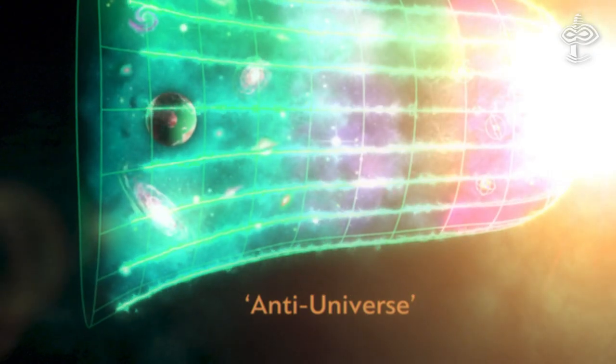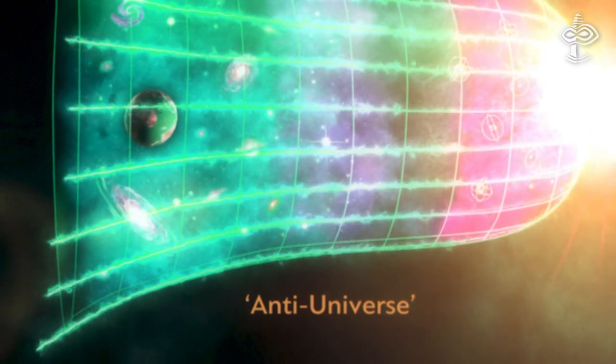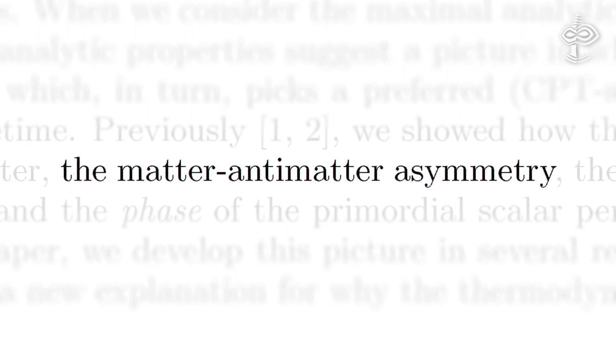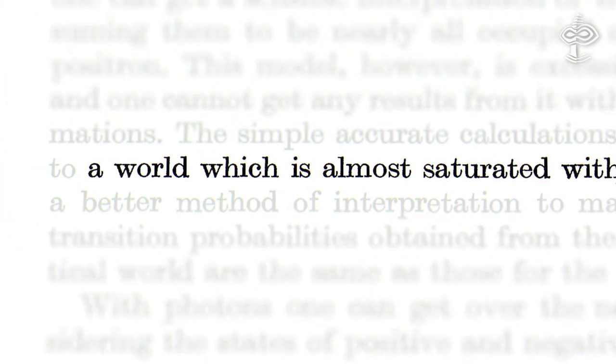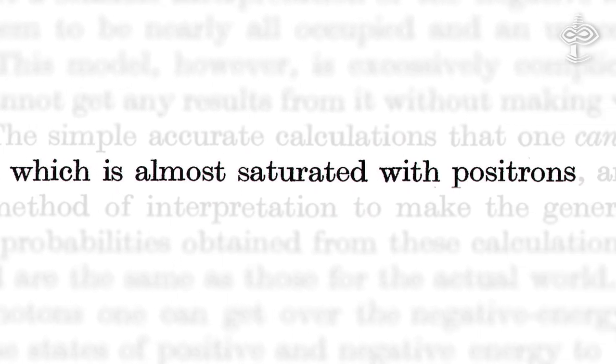The anti-universe will stretch back in time from the Big Bang, getting bigger and bigger. And it will be dominated by antimatter—or as was predicted by Dirac, be the world saturated by positrons. And its spatial properties will be inverted compared to those in our half. The situation is similar to the creation of electron-positron interaction in a vacuum.